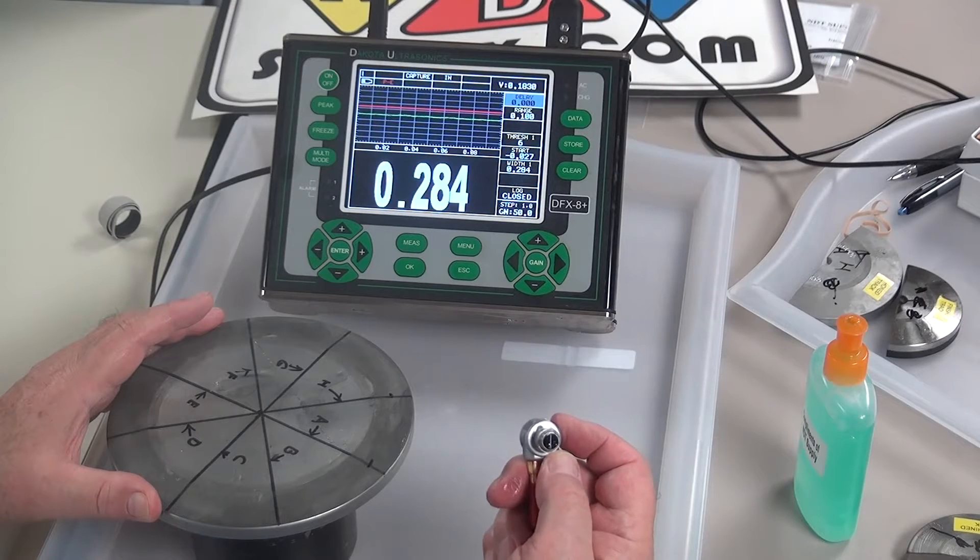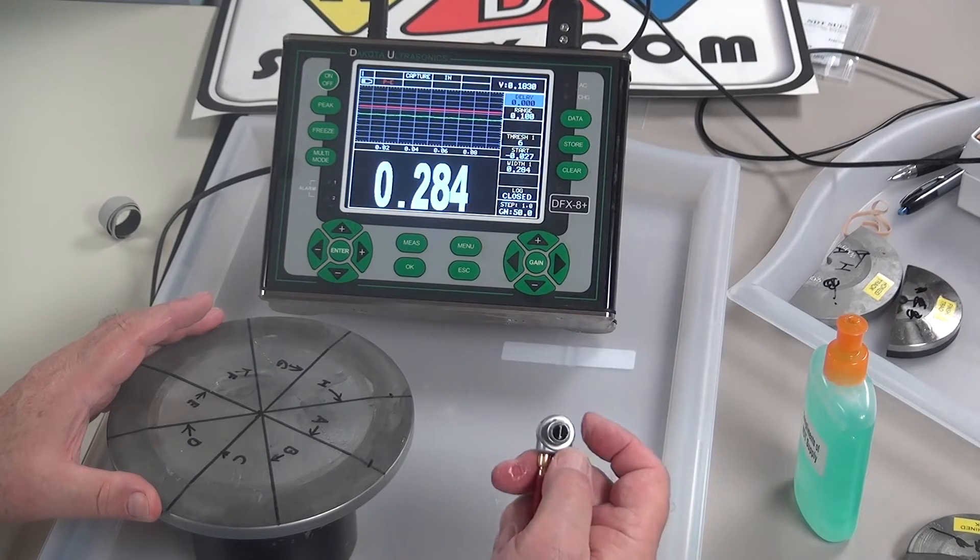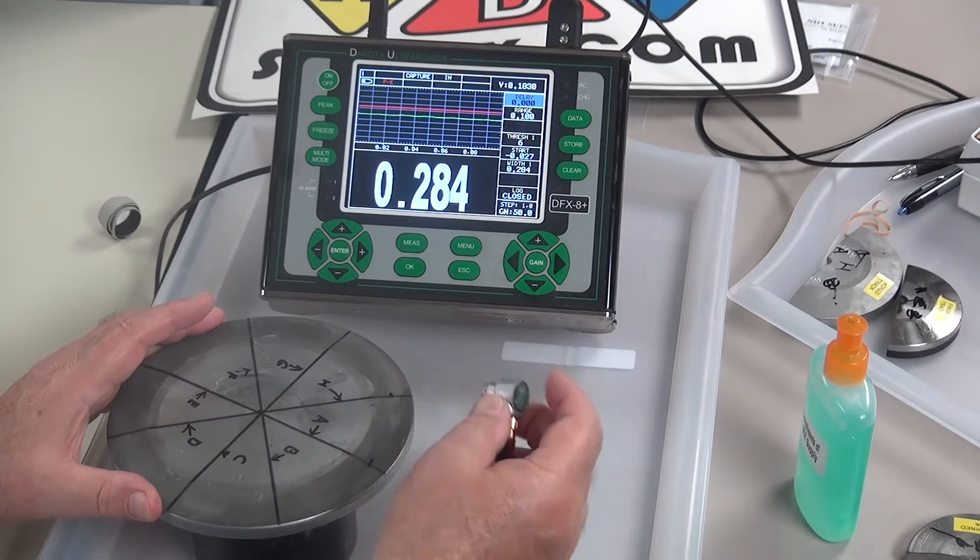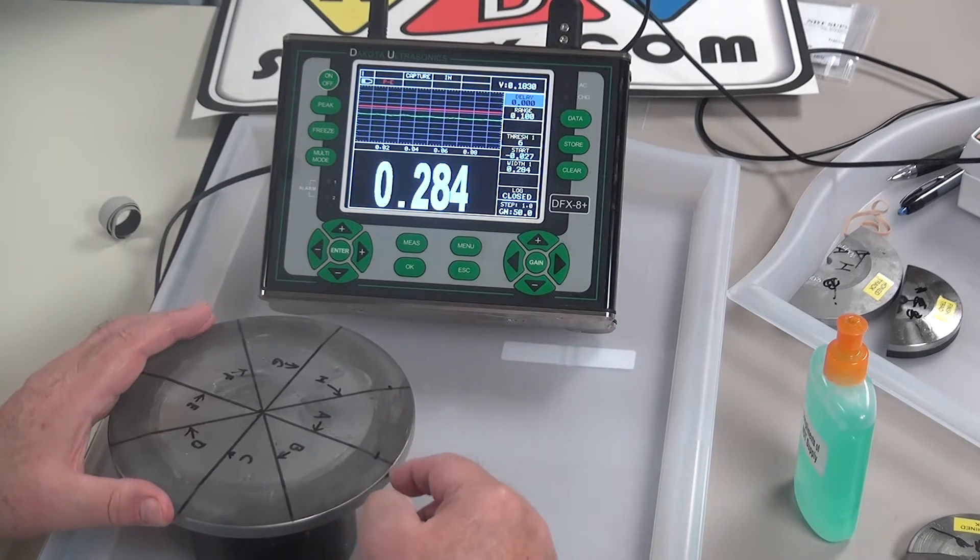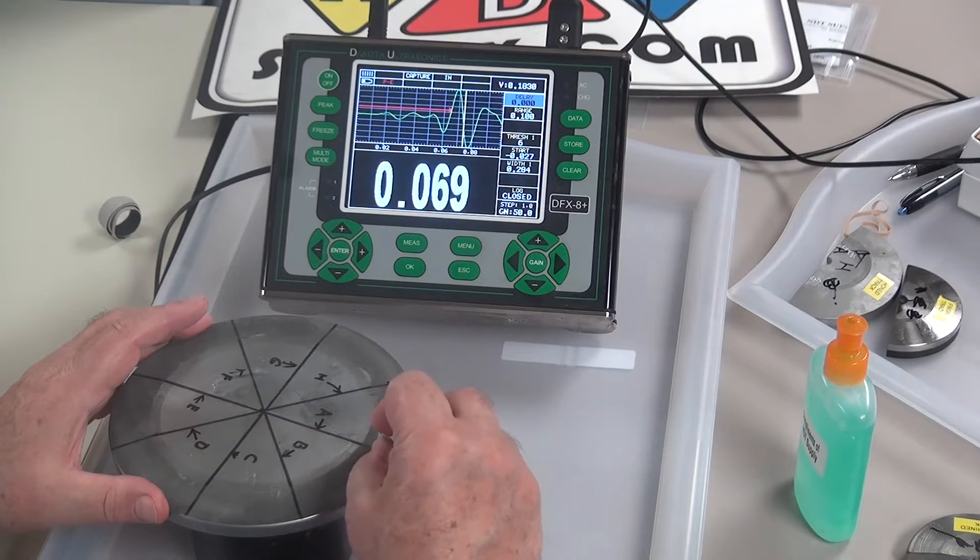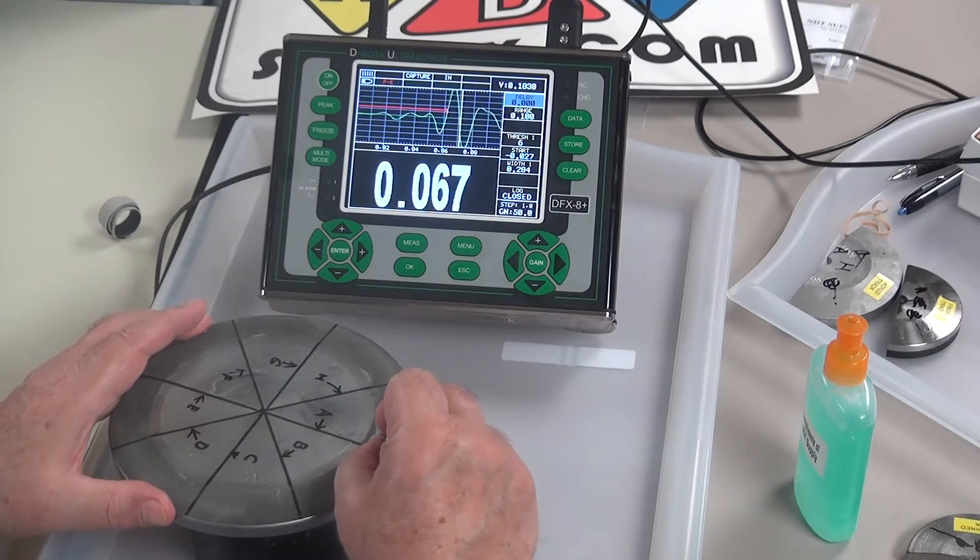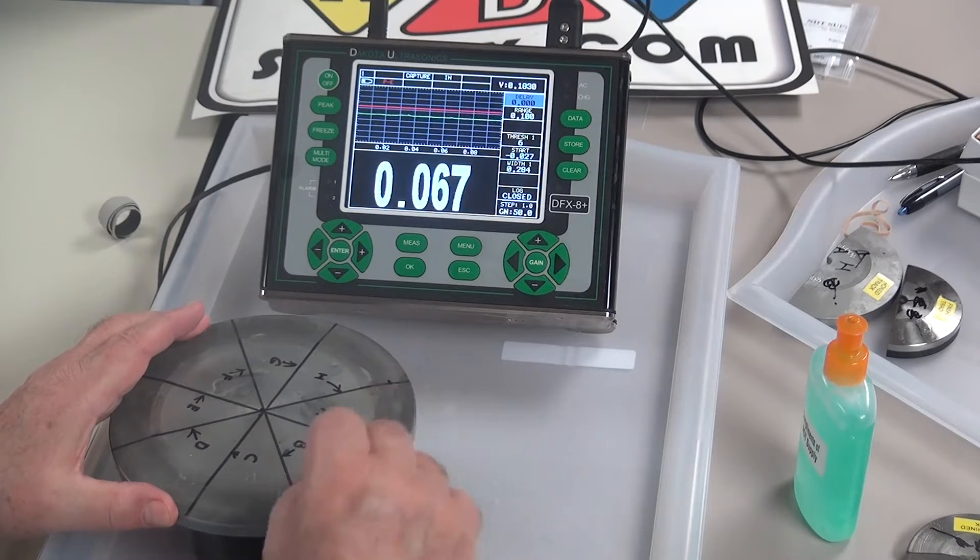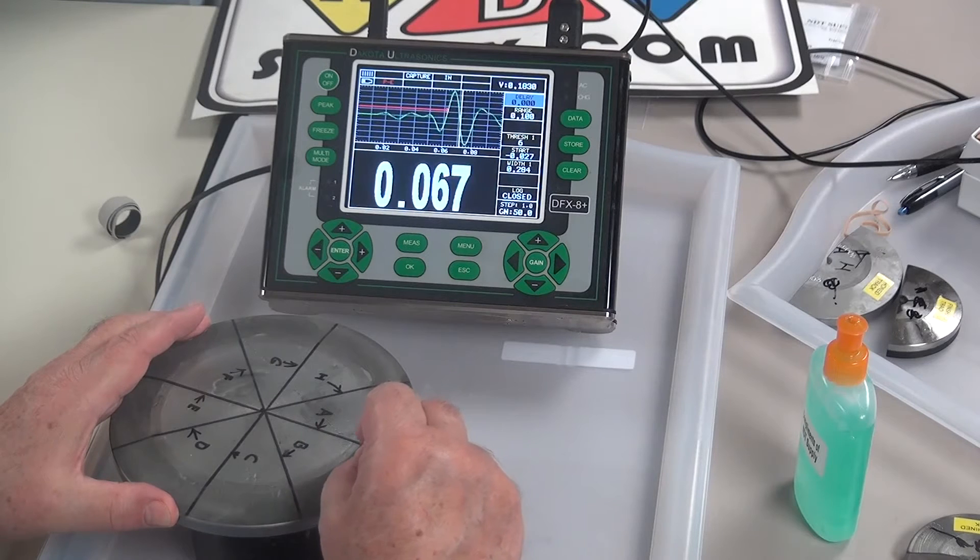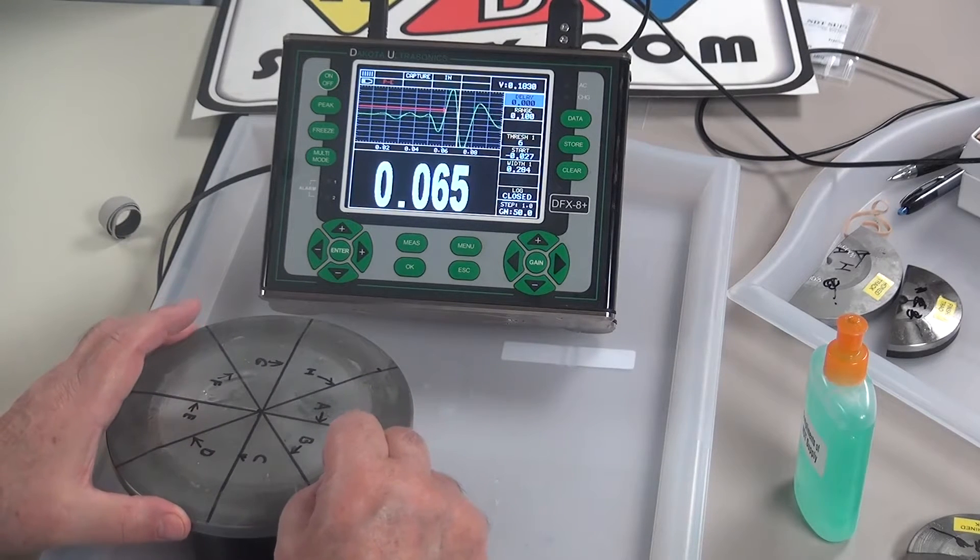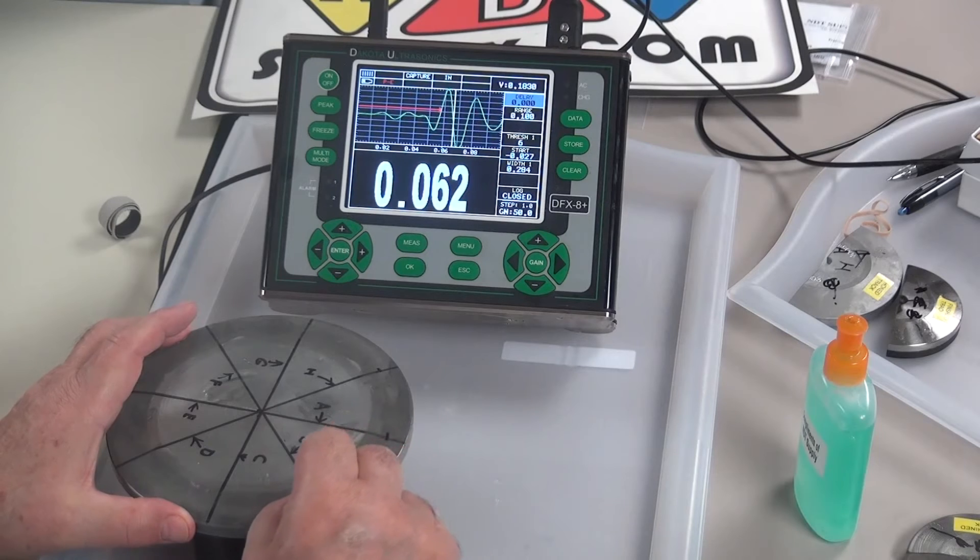We're using a 6 millimeter composite dual probe, 5 megahertz, coming to the outside diameter, section A, and we're going to scan from A to B. We're going to smooth the couplant out here and try to scan smoothly and try to stay at the outside. Okay, so there's A to B.